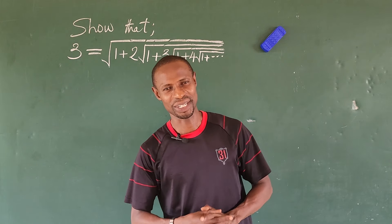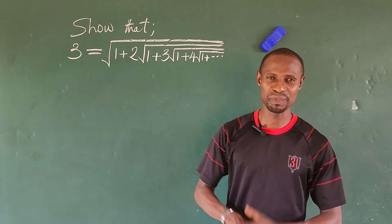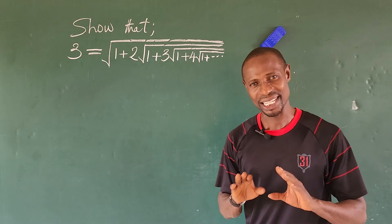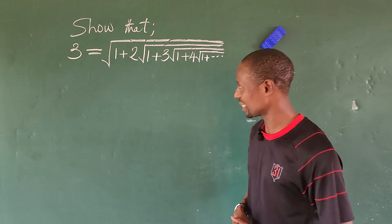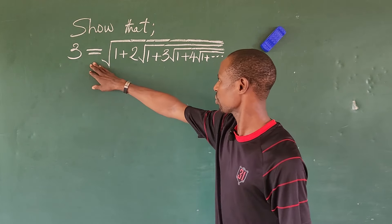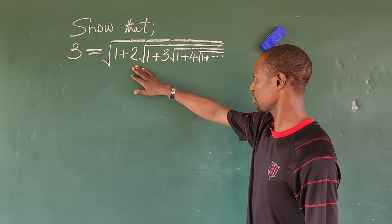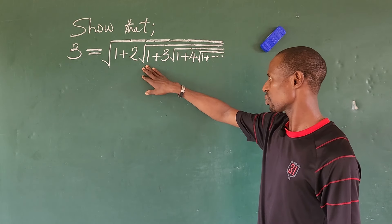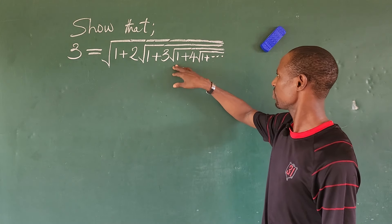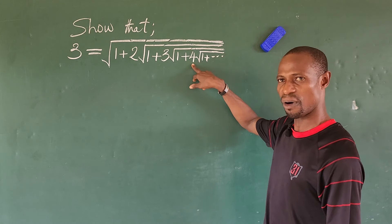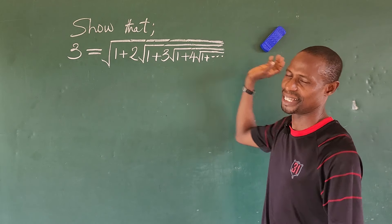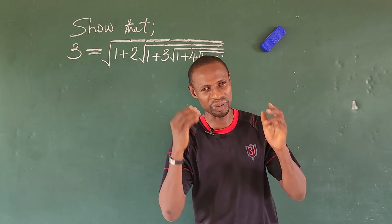Hi everyone, welcome to today's class. Today we have a very nice proof on the board. The question is a bit easy, but let's look at it together systematically. The question says: show that 3 equals the square root of 1 plus 2 into the square root of 1 plus 3 into the square root of 1 plus 4 into the square root of 1 plus da-da-da, continuing to infinity. So how do we prove this?